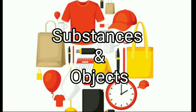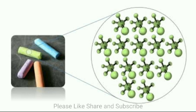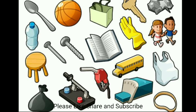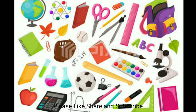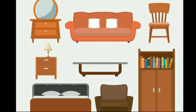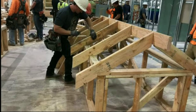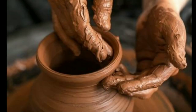Substances and Objects. All substances are made up of very small particles. Objects are made up of substances and have a specific shape. Their parts have a specific arrangement by which we identify them. We use wood, plastic, or steel to make a table, chair, or cupboard. These substances have the strength required to make these articles, and can be given a desired shape.